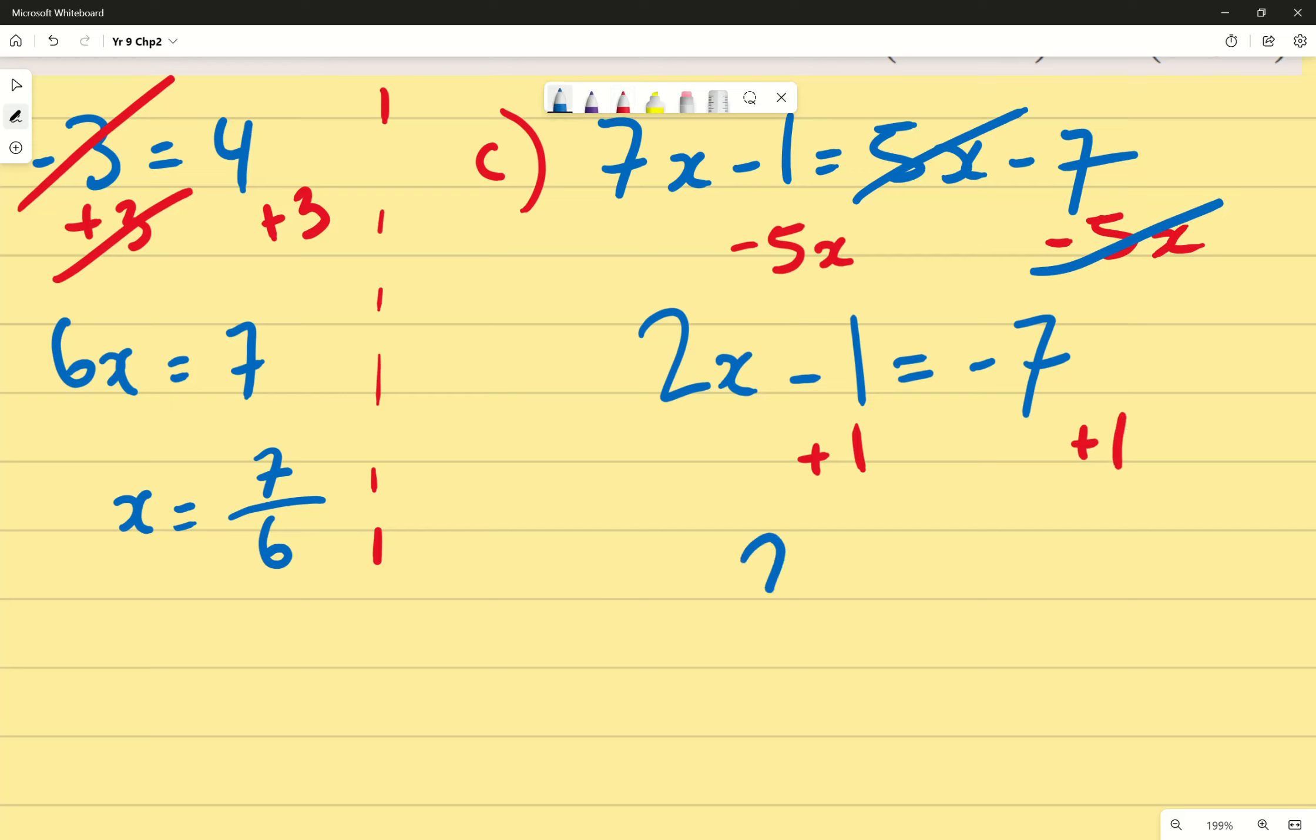And we end up with, apologies, 2x minus 1 plus 1. Of course those two cancel out. Negative 7 plus 1, what does that get me? Negative 6, thank you very much. And finally, of course, because divided by 2 on both sides,